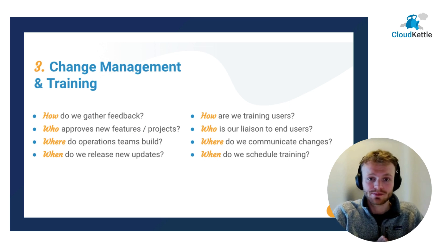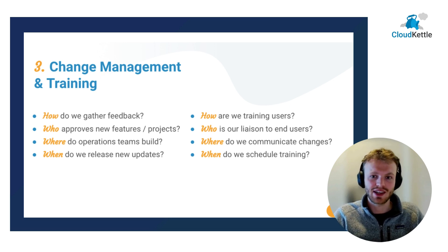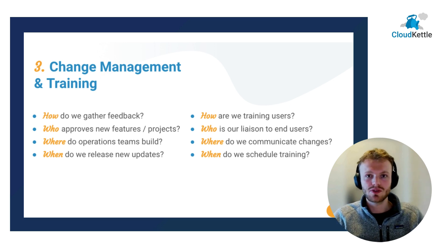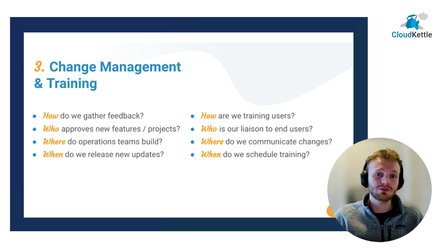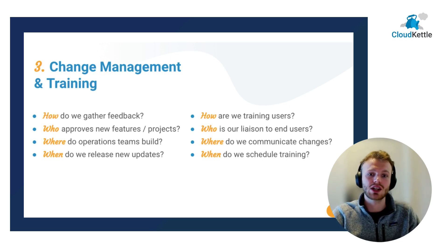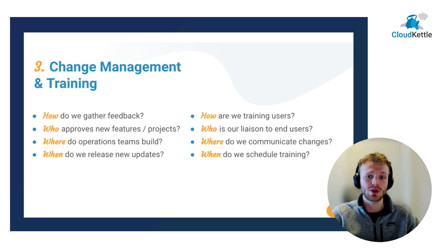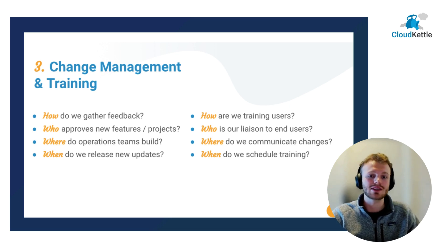The third priority is change management and training. I know that subject elicits a lot of eye rolls from RevOps teams, and while it doesn't need to be overkill, part of moving from HubSpot to Salesforce is partly maturing as a RevOps organization. Part of that maturity is having documented processes so that regardless of who moves, leaves the company, or needs to be held accountable, you have that in writing. Important change management questions include: how are we gathering feedback from teams? Who on the RevOps team approves new features and projects to be built? Where do our developers and administrators build these new projects — whether we're working in VS Code and sandbox? And when and how do new releases get deployed — quarterly, bi-weekly, monthly? What's our level of flexibility and comfort with these changes?